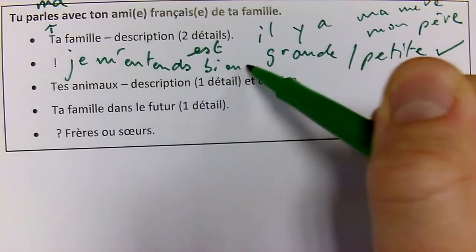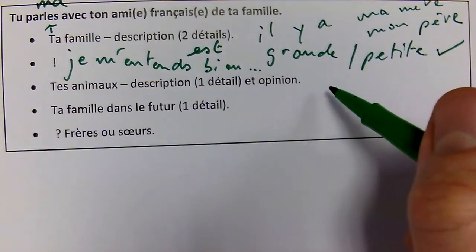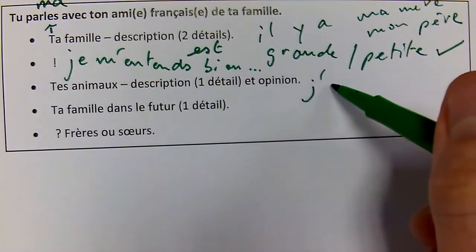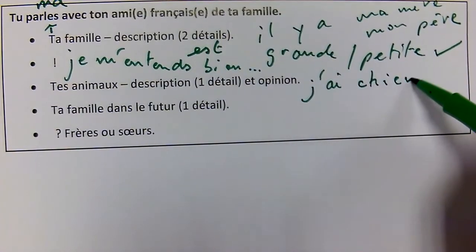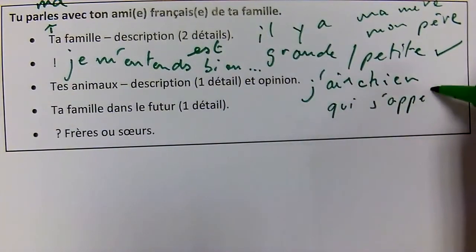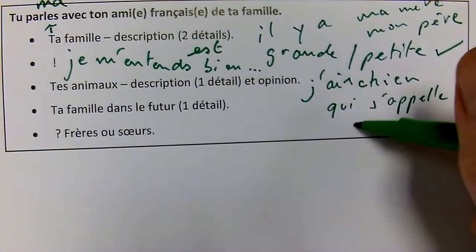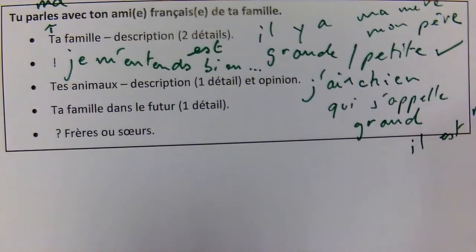Next we have 'tes animaux — description un détail, un opinion.' You're going to have to give how many pets you have, a description and an opinion. If you don't have any, just make it up or say that you don't have any pets. You could give their name or the color as the description, and an opinion. So maybe 'j'ai un chien qui s'appelle...' or 'j'ai un grand chien.'